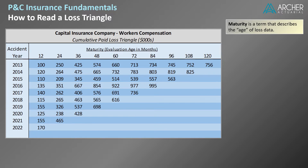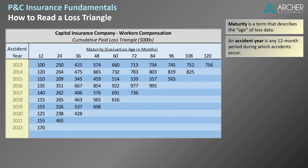In this triangle we have 10 accident years from accident year 2013 through 2022. An accident year is any 12-month period during which accidents occur. Rather than accident year we could have used a different type of time period such as a policy year, report year, or even accident quarter.